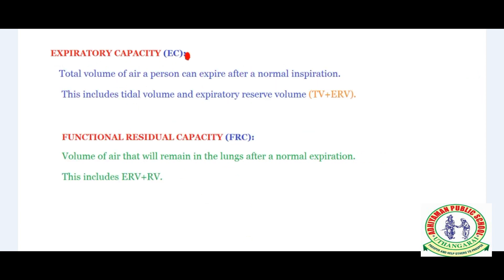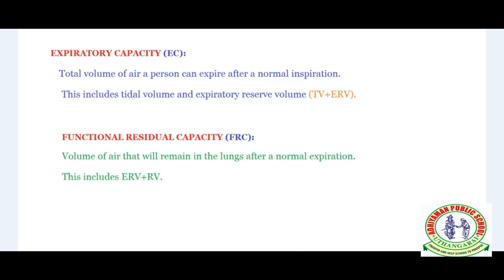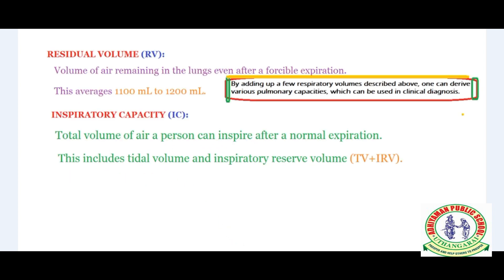Expiratory capacity: the total volume of air a person can expire after a normal inspiration. Expiratory reserve volume is the additional volume of air a person can expire by a forcible expiration. Inspiratory reserve volume is the additional volume of air a person can inspire by a forcible inspiration. Expiratory capacity includes tidal volume plus expiratory reserve volume (TV + ERV). Inspiratory capacity includes tidal volume plus inspiratory reserve volume (TV + IRV). Keep these two in mind.